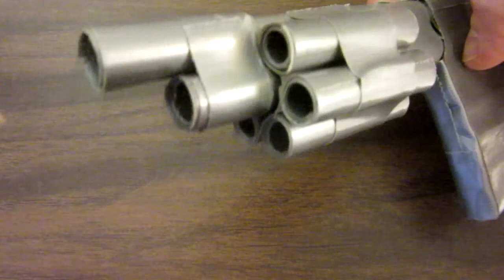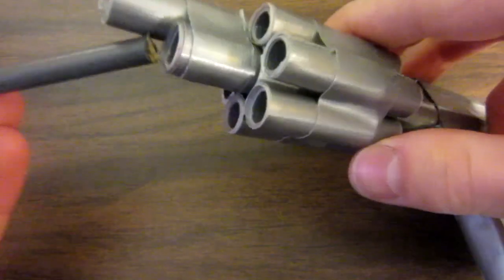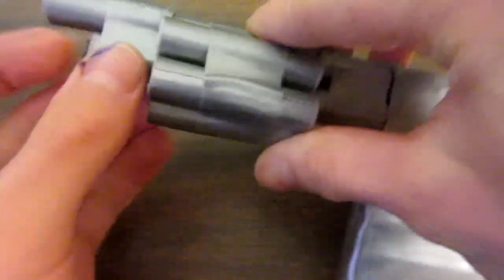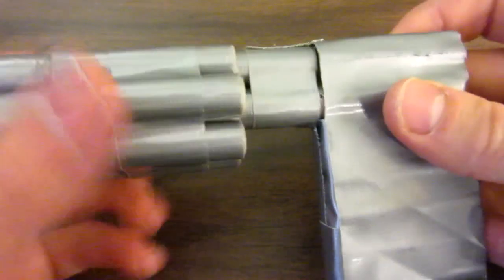To finish off the body, the only non-duct tape component we're going to be using is this cut off pencil crayon. Simply shove it down here. Optional of course, this is just to add some stability. As you can see now, it doesn't bend at all. And there's your moving cylinders.